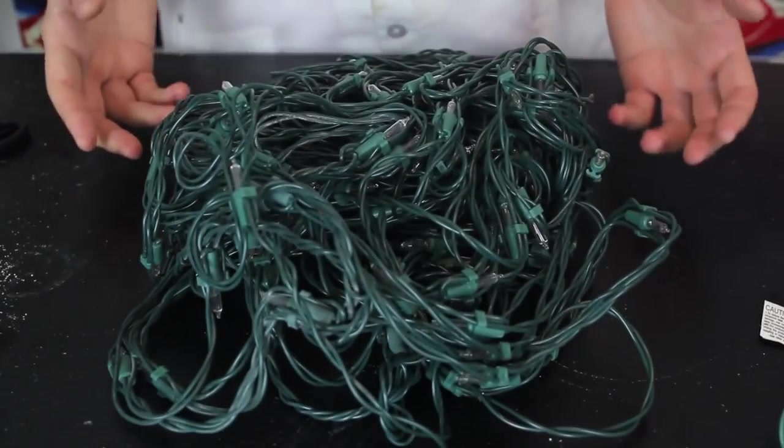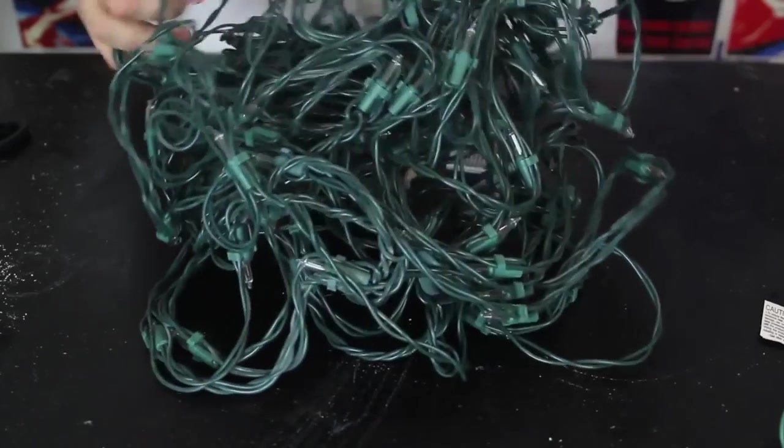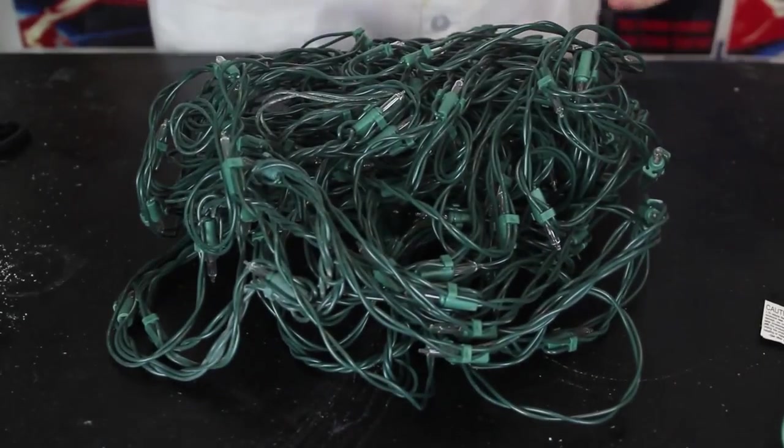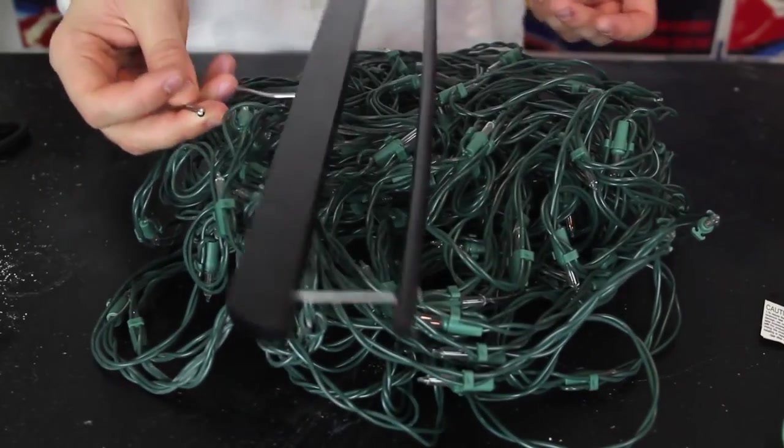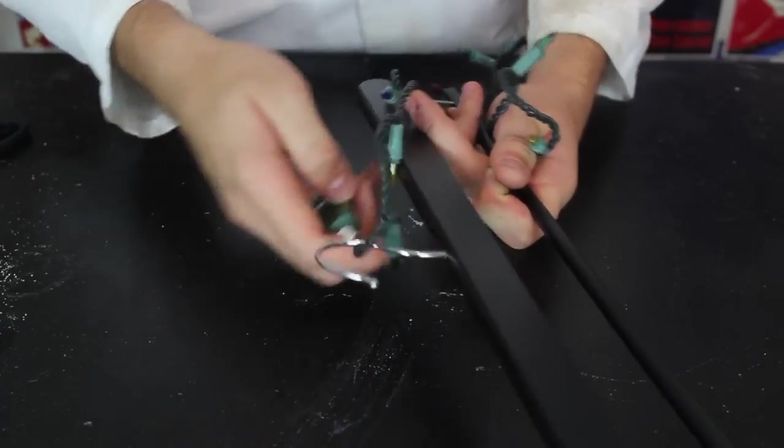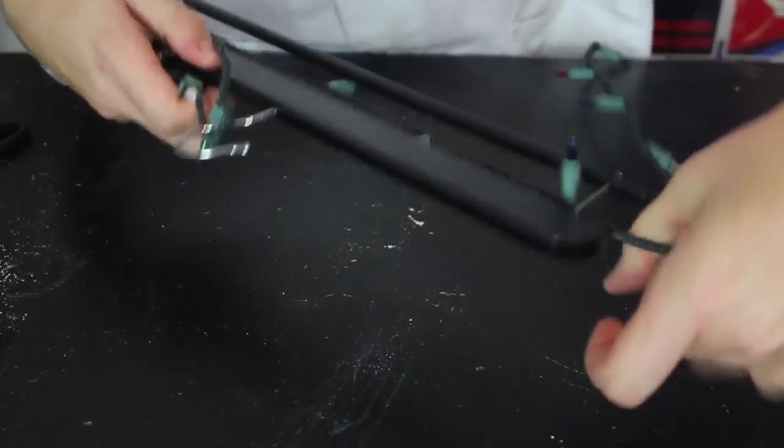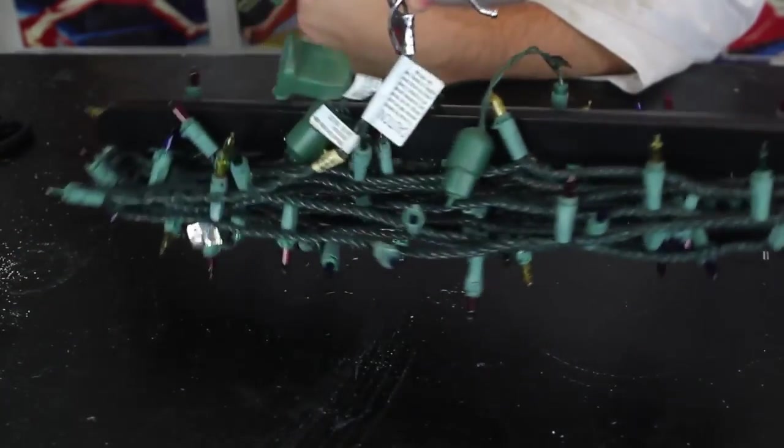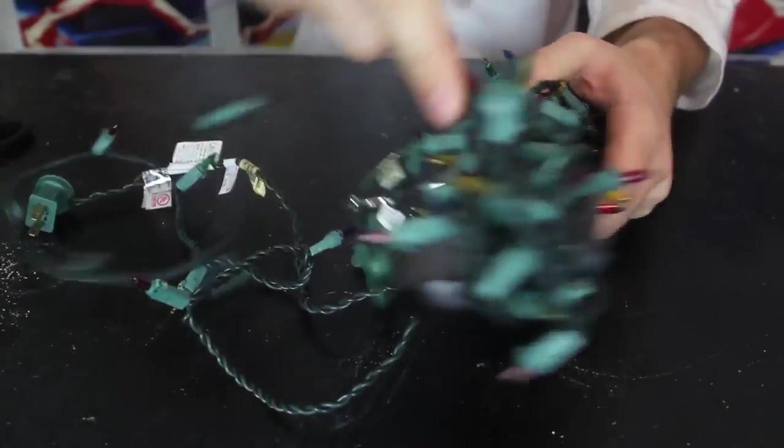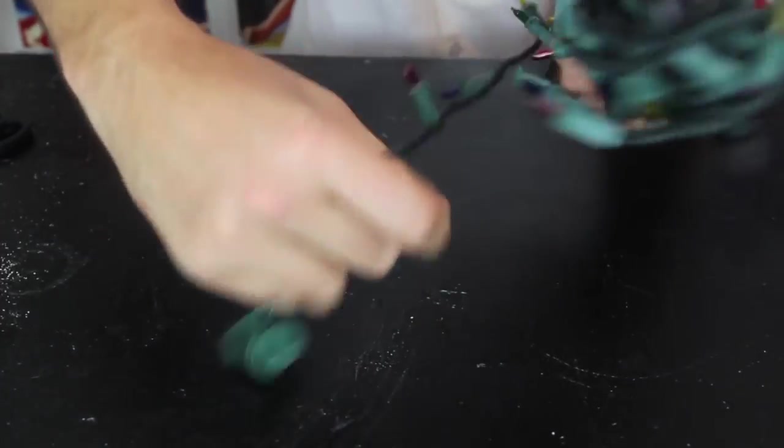Instead of dealing with this mess every time you gotta unpack the Christmas lights, just grab a coat hanger and wrap them up on it. Let's check this out. Grab your hanger and put the start on the top and just go around it. Now you can just hang them or whatever and look how neat and nice it is. And to undo it next year you're just gonna grab it and unroll it. And they're not tangled at all. So this is like one of the best Christmas life hacks for sure.